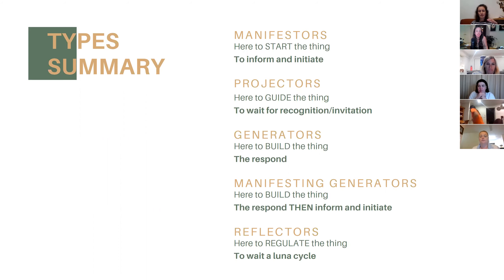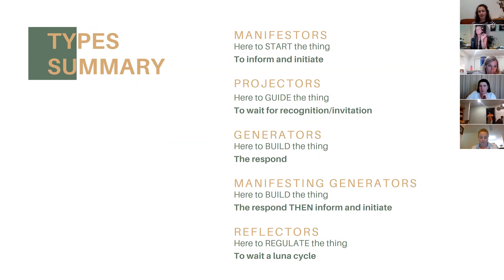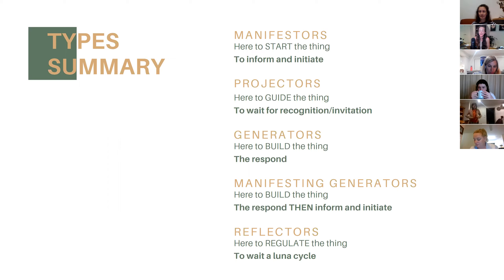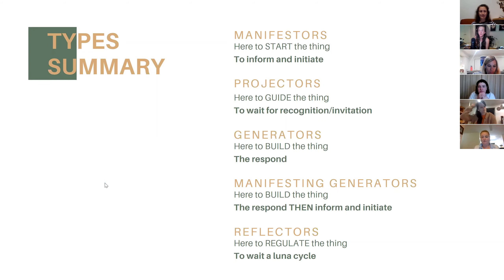So in the comments: projector, manifesting generator, generator, MG — lots coming in. I'm just going to tell you a story about each of these so you have an understanding of them. It's a bit like 'I'm an Aries, I'm a Capricorn' — it's how we're here to be designed and work. So a manifestor — think of a construction example. Manifestors are the visionaries. They go: 'There's a plot of land, we're going to build a city there, I see this vision.' That's a manifestor's job — they are here to initiate things, light the match, knock the first domino.